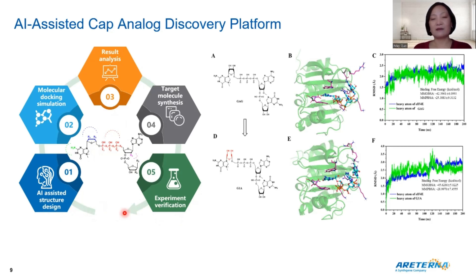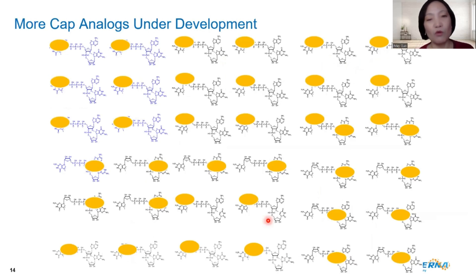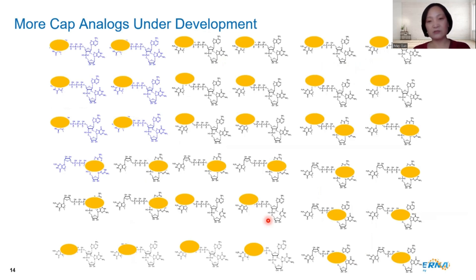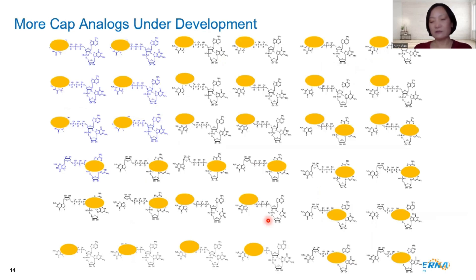And that's machine learning: design, test, perform, learn. We have more cap analogs under development. The fourth structure I showed you is just a start. Hopefully we'll have more products introduced to market later this year.